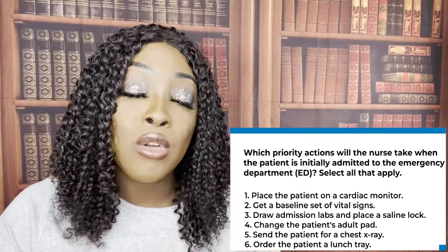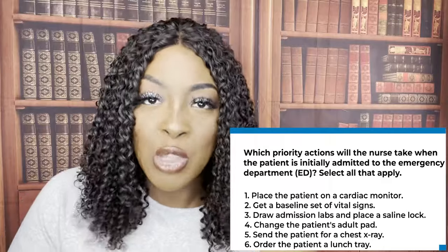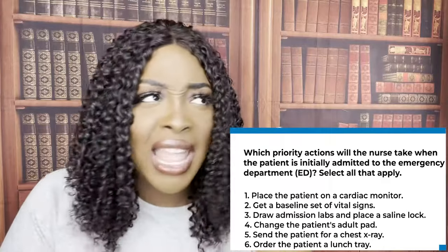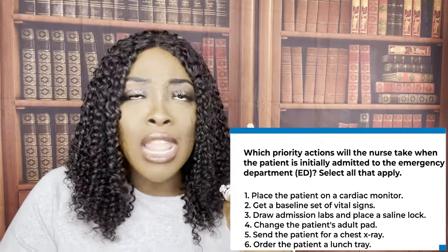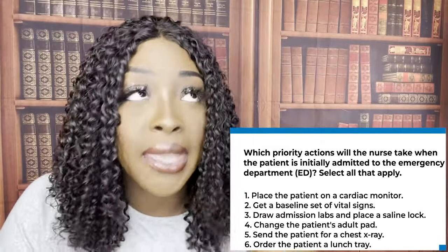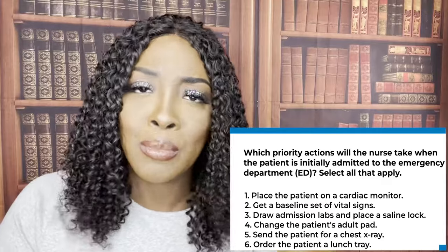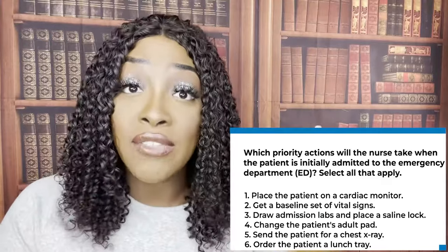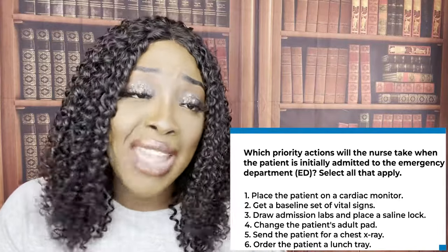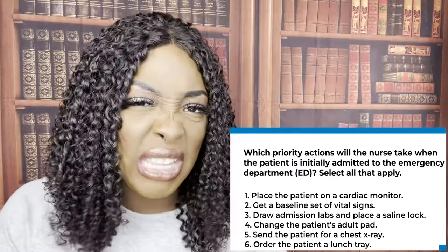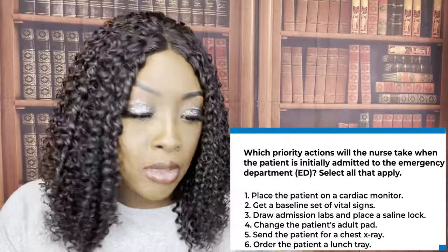When you get a question about priority, think of three things: Maslow's hierarchy of needs — specifically physiological integrity, what's keeping that patient alive, like vital signs, glucose, nutrition, hemodynamic stats. Think of ADPIE: assessment, diagnosis, planning, intervention, evaluation — you always assess your patient first. And think of ABCs: airway, breathing, circulation. Whenever you're asked about priorities, they're really asking you about one of those three things, usually physiological integrity.